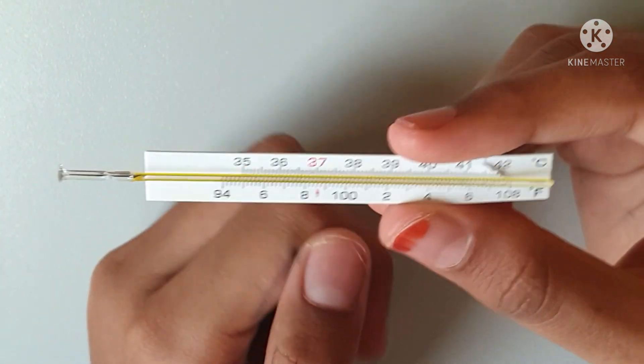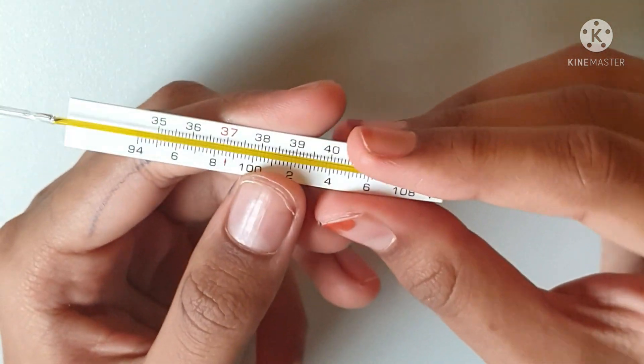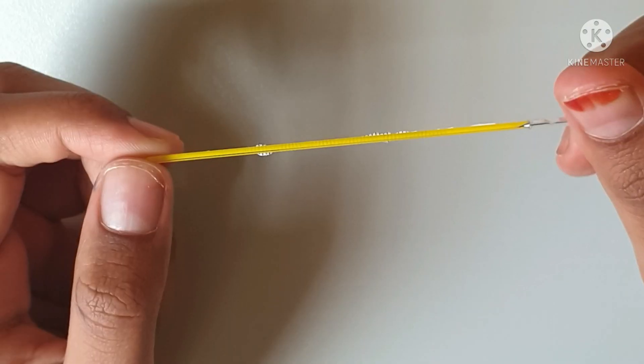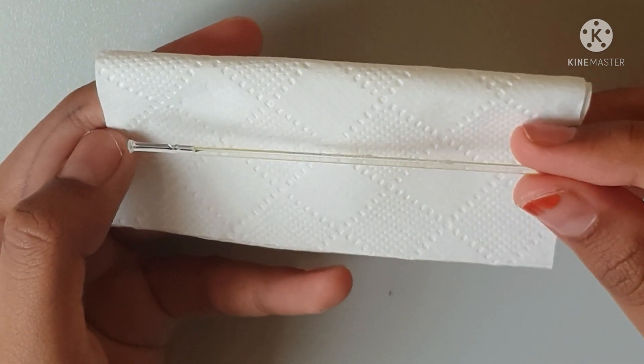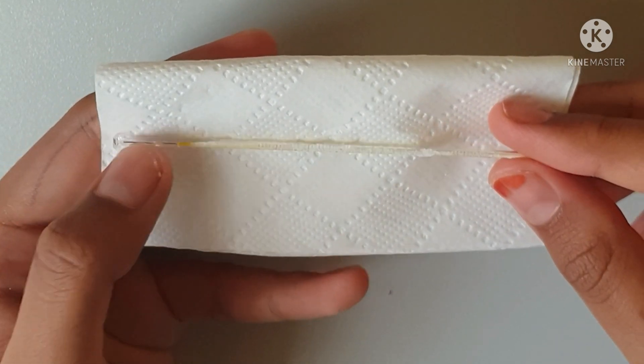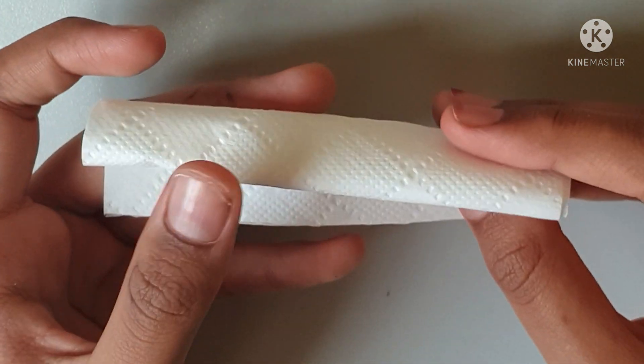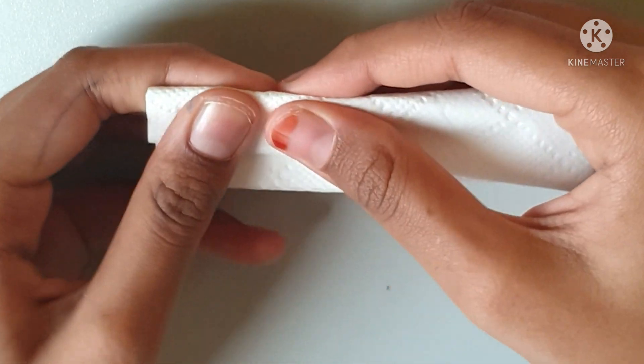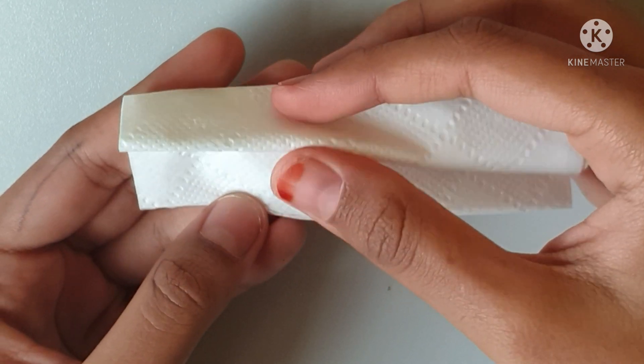They have stuck this one to the paper so we can take it out. Now we're going to break this thin tube. First, I'll keep it in a small tissue, close the tissue, and then we'll break it right near the kink. That's it, and let's see.